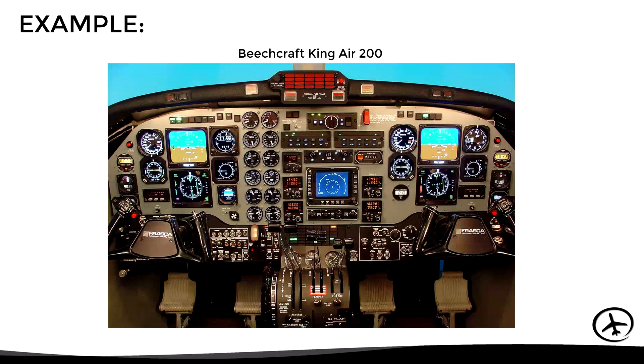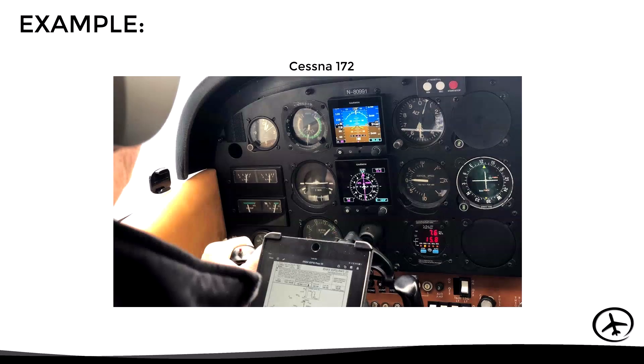Here we can see an example of the implementation of these first EFIS systems in a Beechcraft King Air. As we can see, both the attitude indicator and the HSI were replaced by digital displays, while the rest of the instruments are analog. Another example can be seen here with a Cessna 172, where again the attitude indicator and heading indicator were replaced by digital displays.